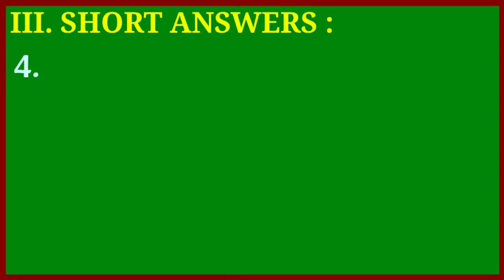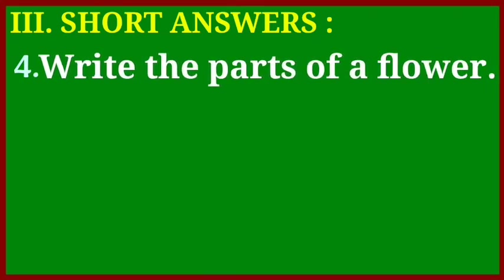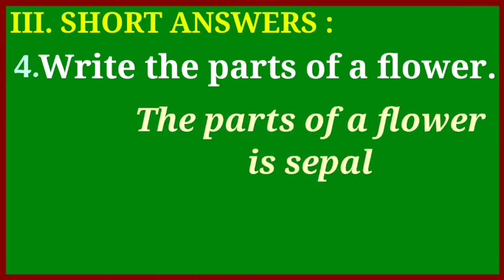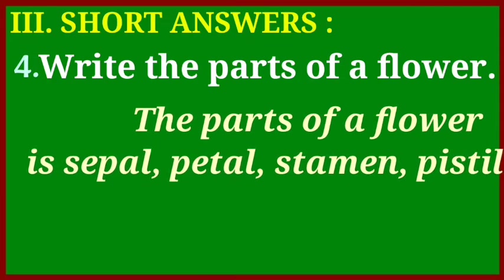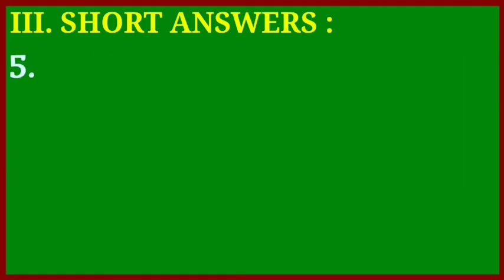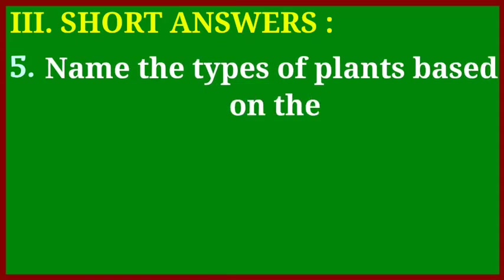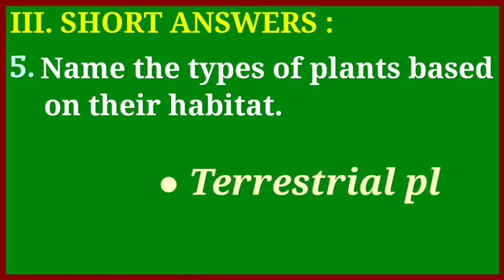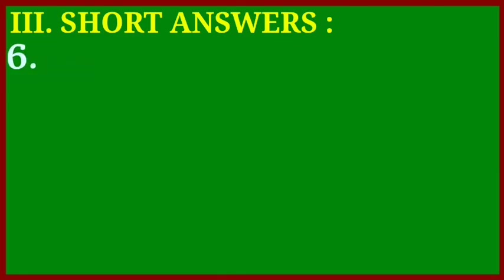Question number four: write the parts of a flower. The parts of a flower are sepal, petal, stamen, and pistil. Question number five: name the types of plants based on their habitat — terrestrial plants and aquatic plants.